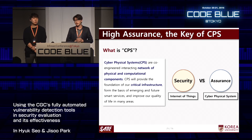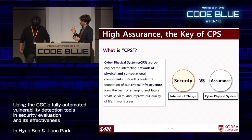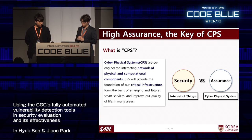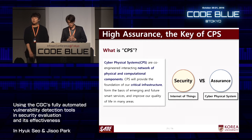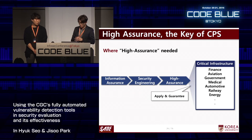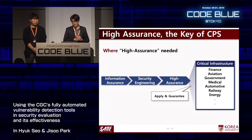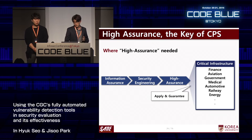Before talking about high assurance for CPS, let's briefly check some points. CPS — Cyber-Physical Systems — are co-engineered interacting networks of physical and computational components, and are the foundation of critical infrastructure. So CPS should consider information assurance, because critical infrastructure such as finance, aviation, medical, and automotive directly and broadly affect human life — high assurance must be guaranteed for these systems.